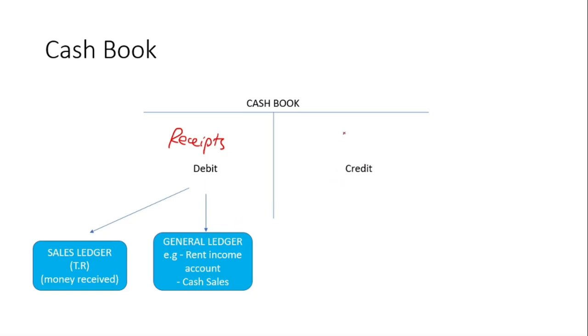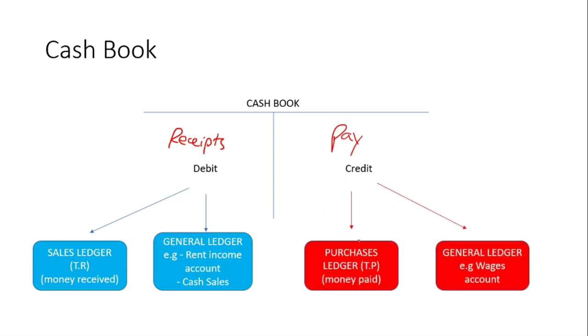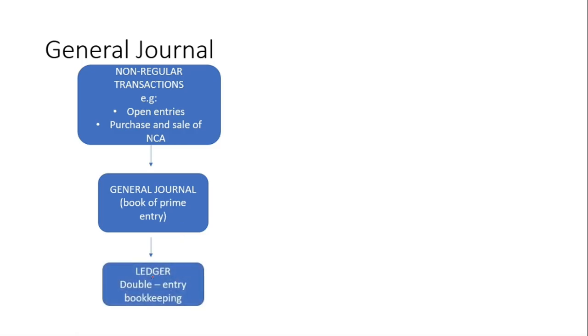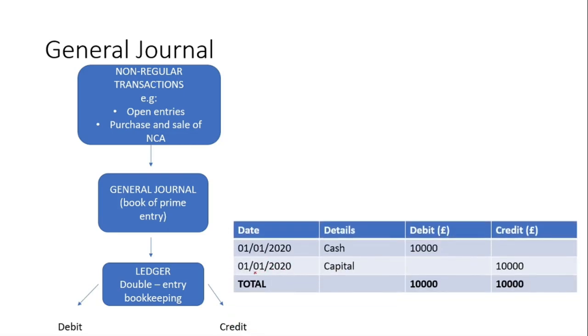On the right side we'll have a credit — that's basically us paying money by cheque, cash, or bank transfer. They normally record the two ledgers: one will be the General Ledger where we could be paying wages, or the Purchases Ledger where we pay our suppliers. Finally we have the General Journal, which records non-regular transactions like opening entries of a business or the purchase or sale of an asset. For example, if someone invested £10,000 in our business, we record the date, debit Cash and credit Capital, and then total both sides — which will always equal.